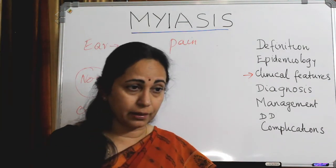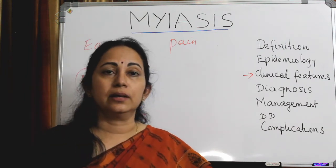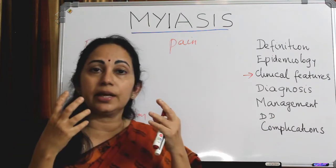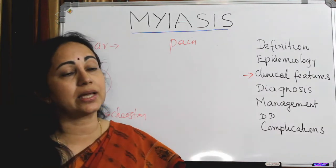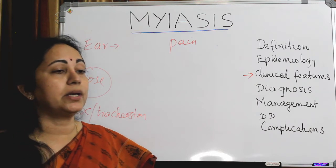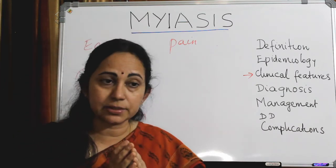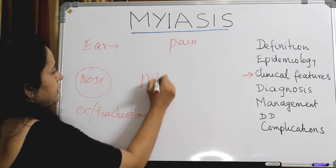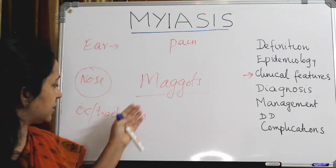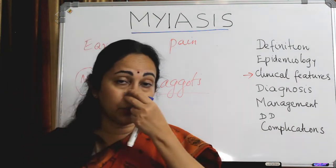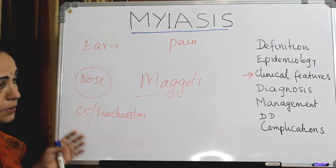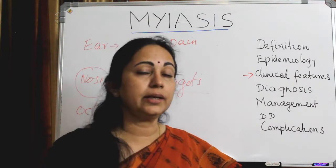In the nose, myiasis can cause severe pain, nasal discharge, epistaxis, facial pain, facial swelling, and orbital or eyelid edema — all surrounding areas of the nose can be affected. On examination, maggots can be seen inside the nose, along with nasal septal perforations, palatal perforations, and highly inflamed and edematous nasal mucosa.